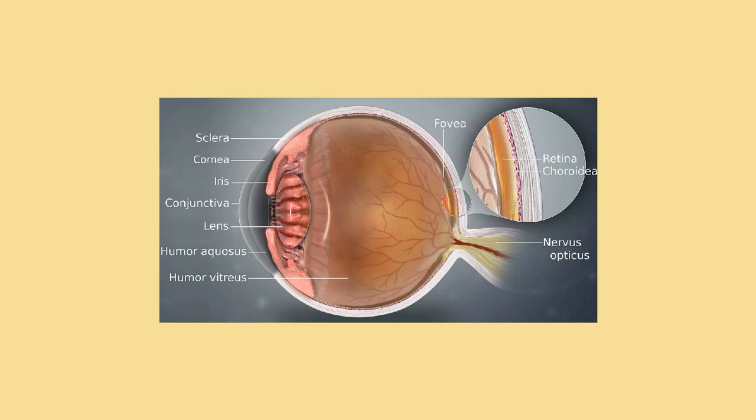The eye includes a lens similar to lenses found in optical instruments such as cameras and the same physics principles can be applied. The pupil of the human eye is its aperture; the iris is the diaphragm that serves as the aperture stop. Refraction in the cornea causes the effective aperture, the entrance pupil, to differ slightly from the physical pupil diameter.